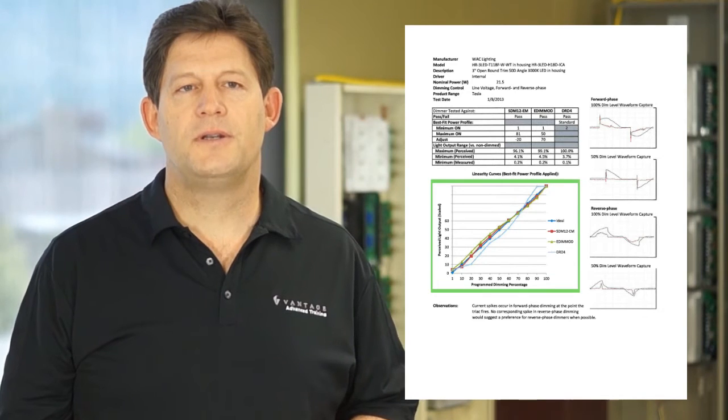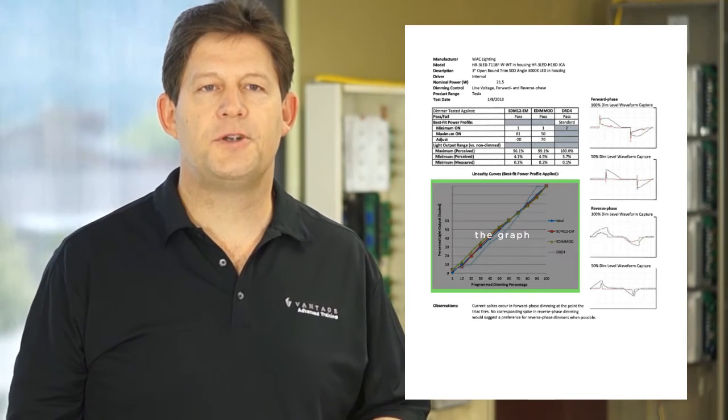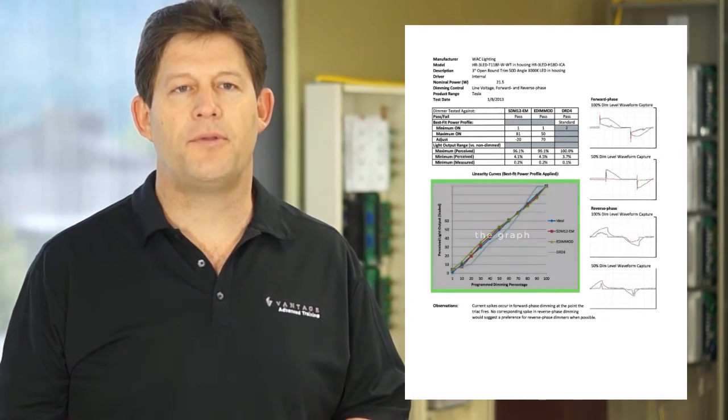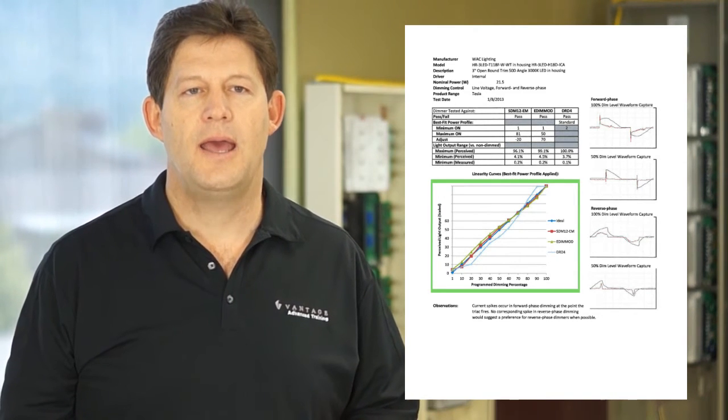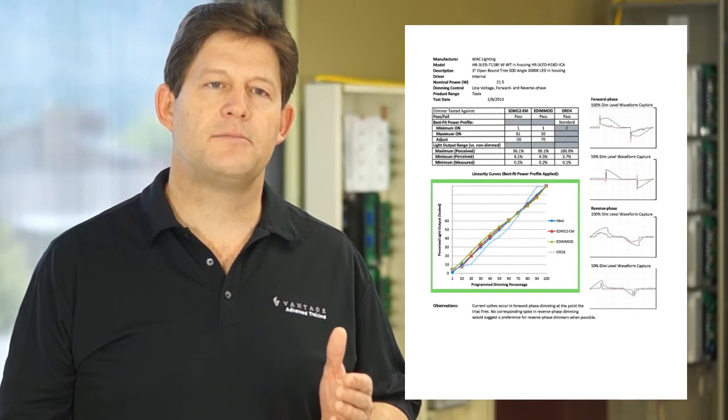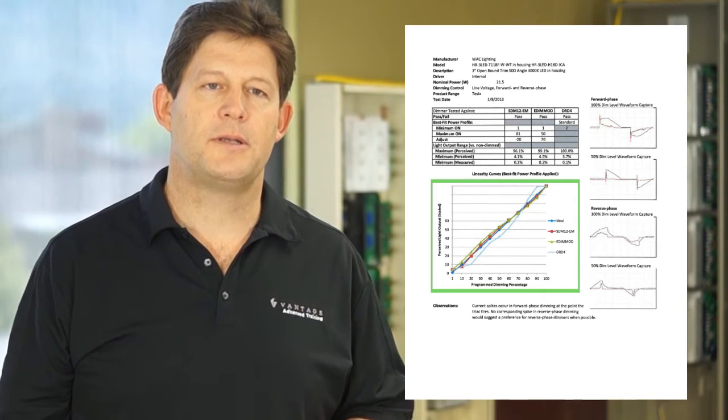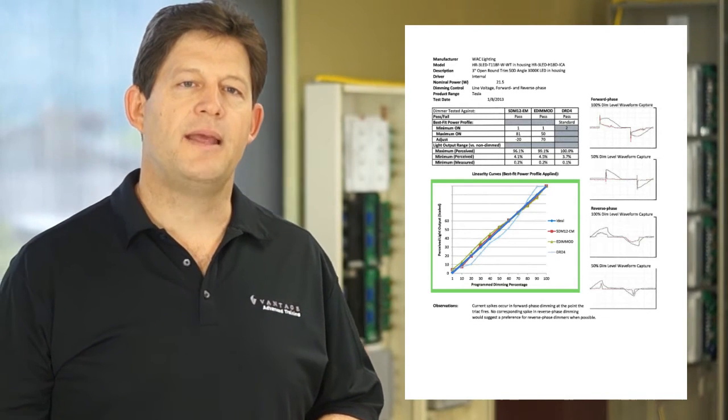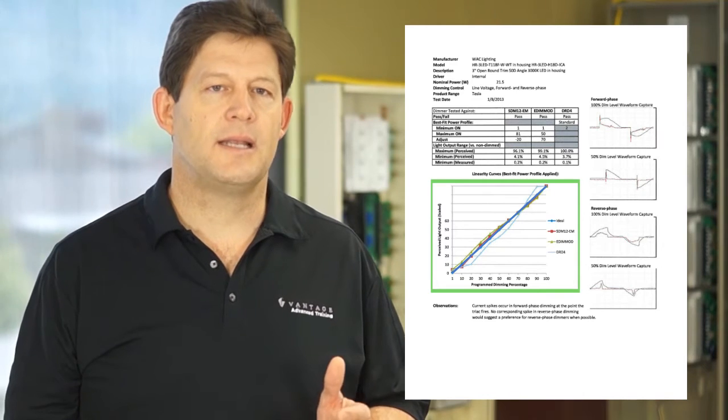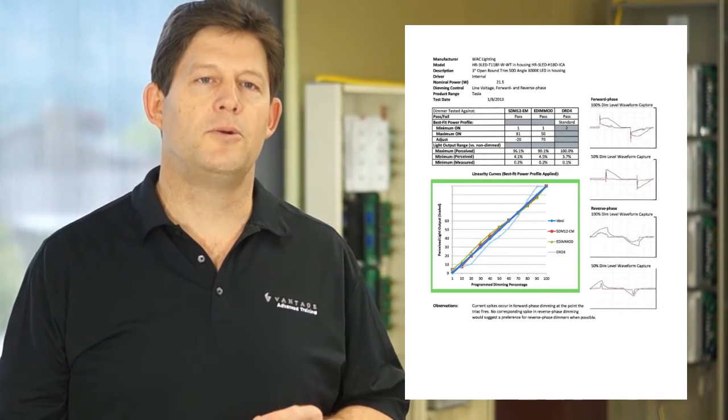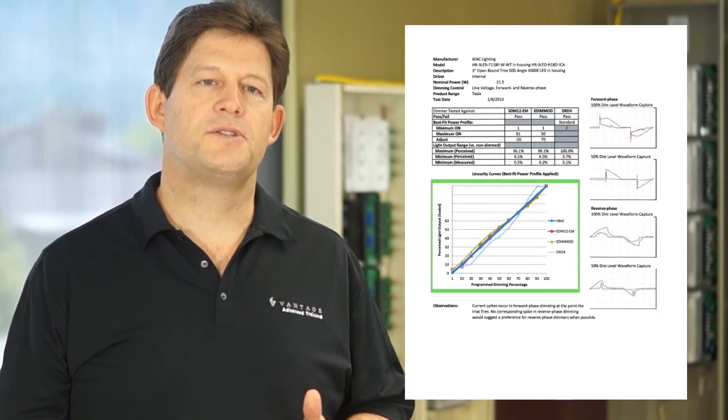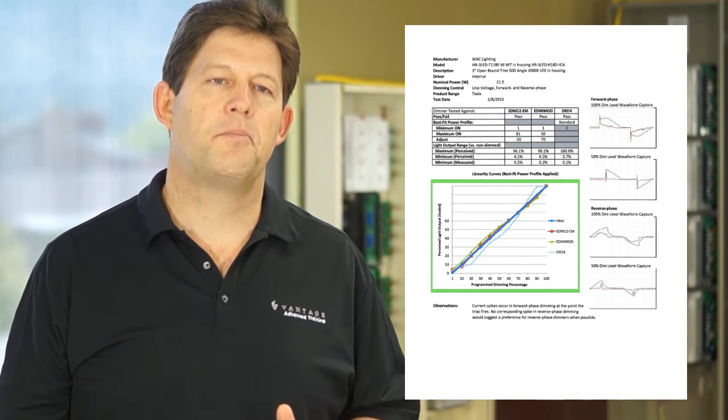The next portion of the report is the graph, which shows perceived intensity versus dimming program level throughout the entire dimming range, after having applied the best fit power profile parameters. Here we graph the ideal straight line, which is a linearity curve, the dark blue line, as reference to compare the actual linearity per dimmer.